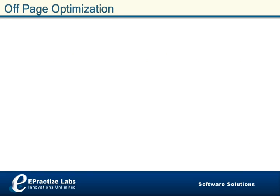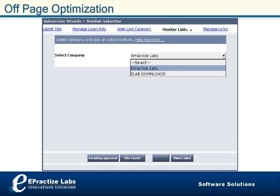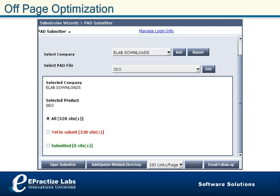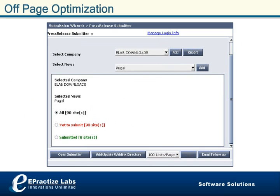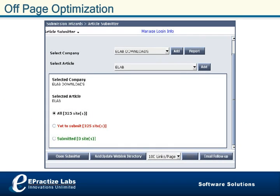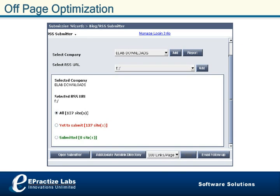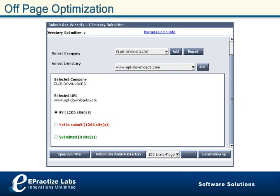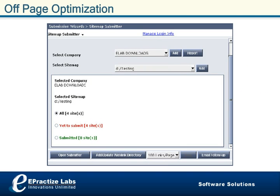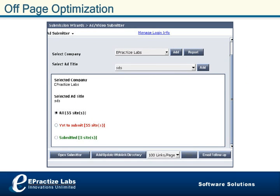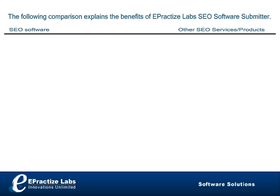Off-page optimization includes complete automated web link management for your website. Submit your site to web link partners via Web Link Submitter, pad files to download sites via Pad Submitter, press releases to news sites via Press Release Submitter, articles to article directories via Article Submitter, your blog to blog directories via RSS Submitter, RSS feeds to RSS directories, your site to search directories via Directory Submitter, your sitemap to major search engines via Sitemap Submitter, free ads to classified directories, and promotion videos to video broadcasting sites.